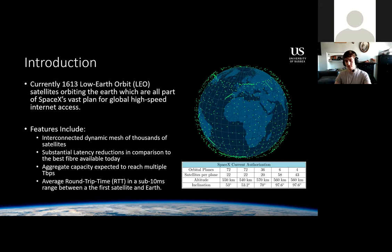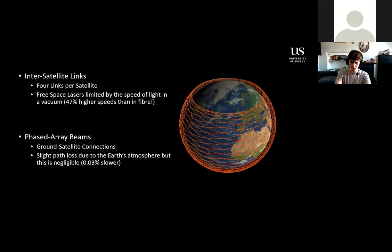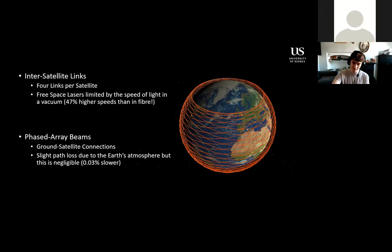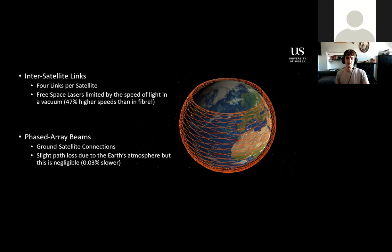The aggregate capacity is expected to reach multiple terabytes per second, with the whole idea being to take over as the new backbone of the internet. Each satellite has two primary forms of communication; the main one they want to use is inter-satellite links, with four satellite links per satellite. On the right is a simulation by Mark Handley, who similarly creates a simulation model in Unity. The advantage of inter-satellite links is that they're not limited by the speed of light in glass like fiber is, allowing 47% higher speeds.